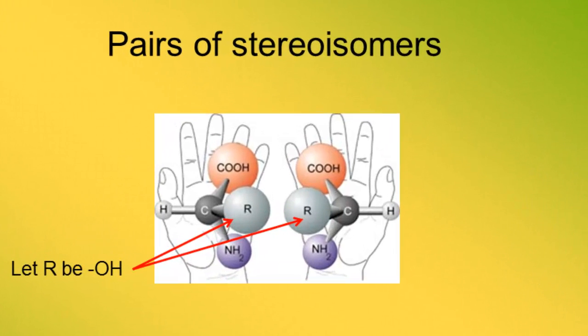Here is an example of a pair of stereoisomers. Carbon is at the center of the molecule and it has four different groups bonded to it. The four groups are a hydrogen, a carboxylic acid group, an R group which we'll consider to be an alcohol group (OH), and an amine group (NH2). For the purpose of further illustrating this molecule and understanding stereoisomers, I'm going to label each of these four groups with a number: one, two, three, or four.